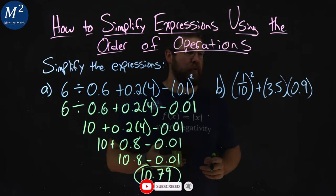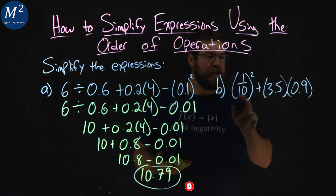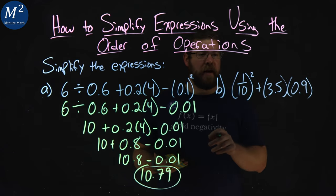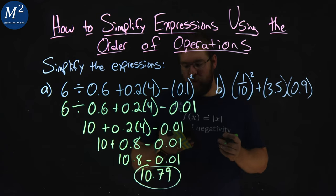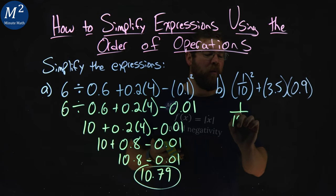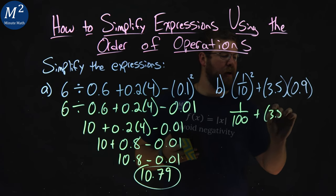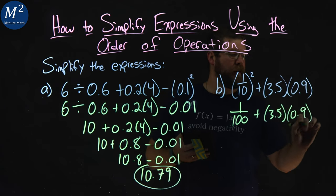Next one here, order of operations still stands. Exponents first, I see that right there. 1 tenth squared is 1 tenth times 1 tenth, which is 1 over 100, plus 3.5 times 0.9.